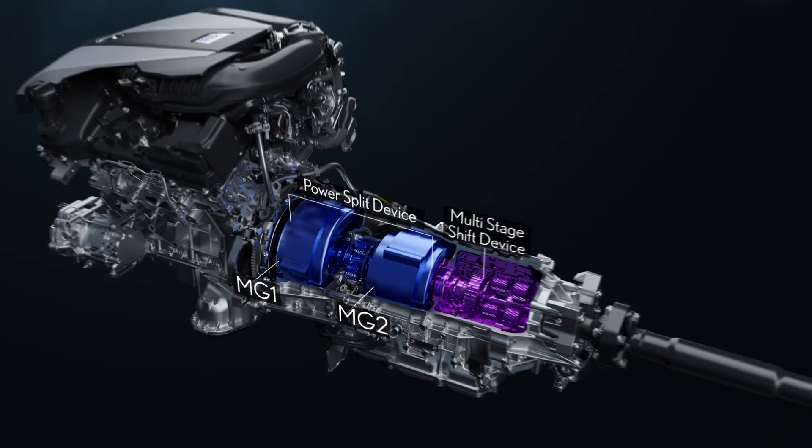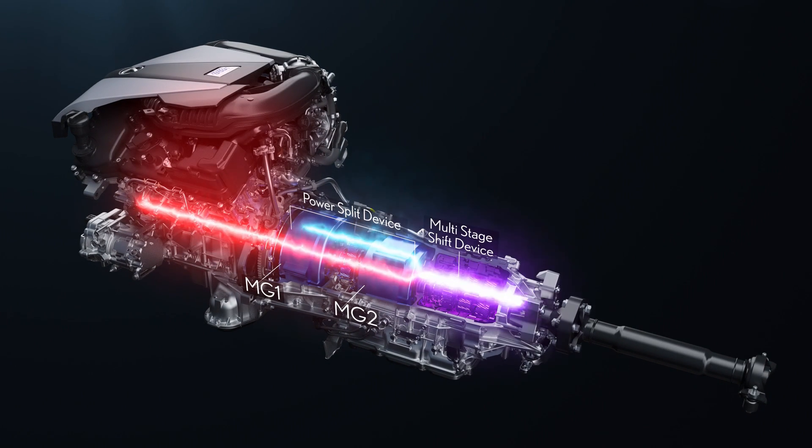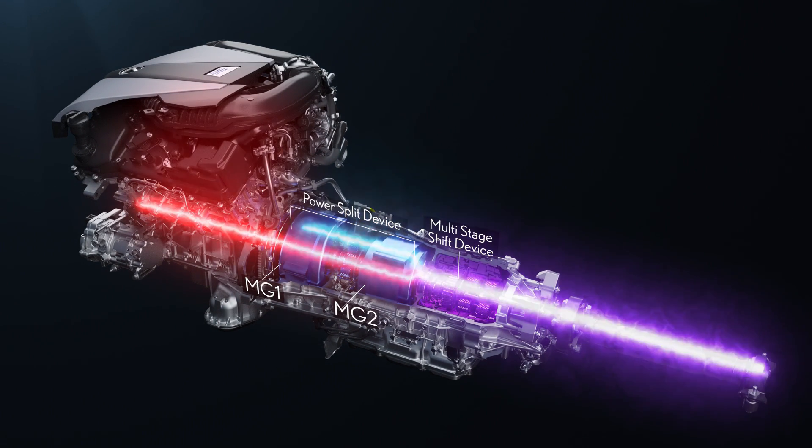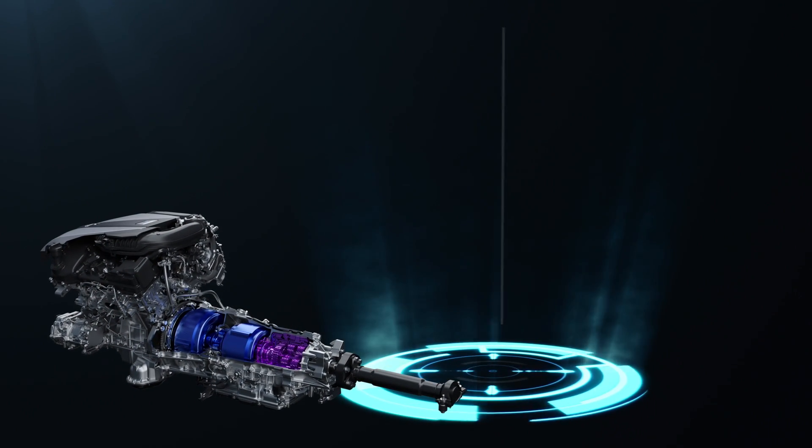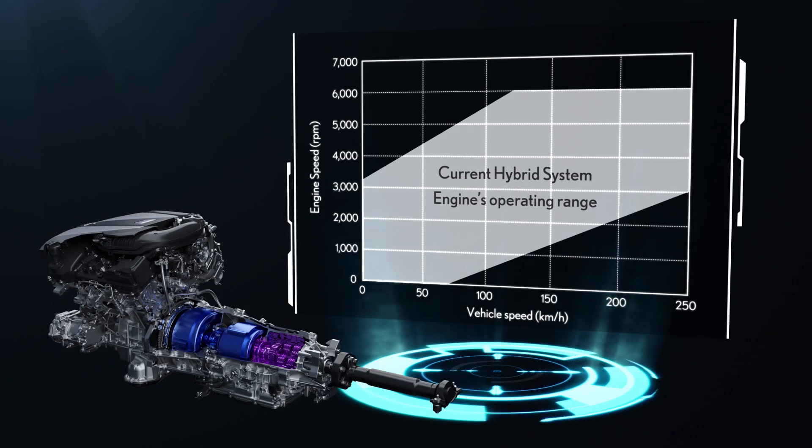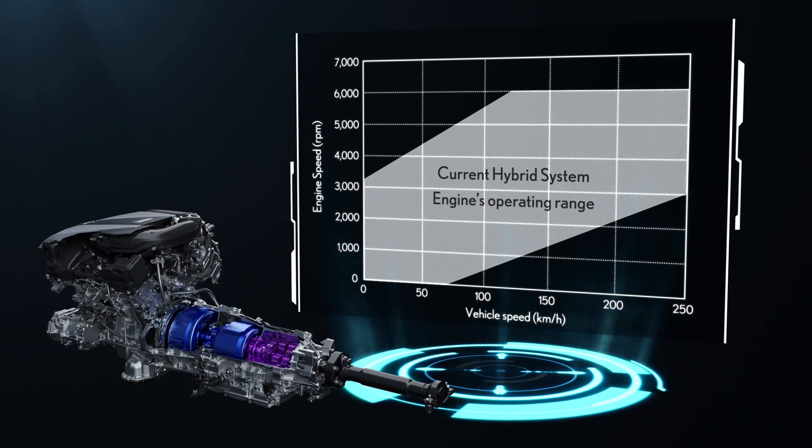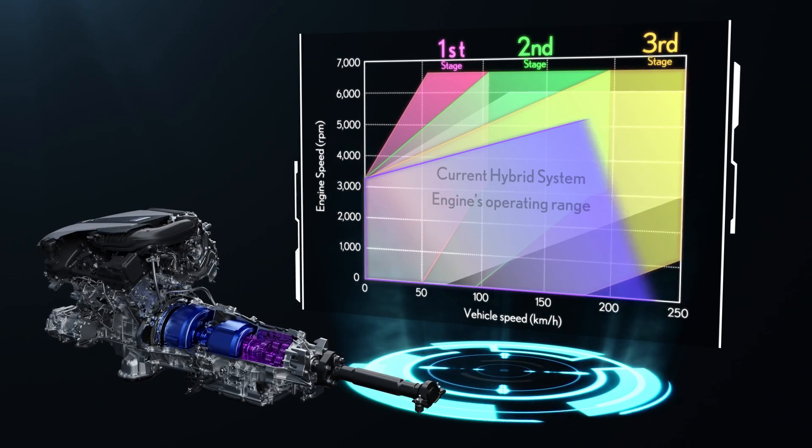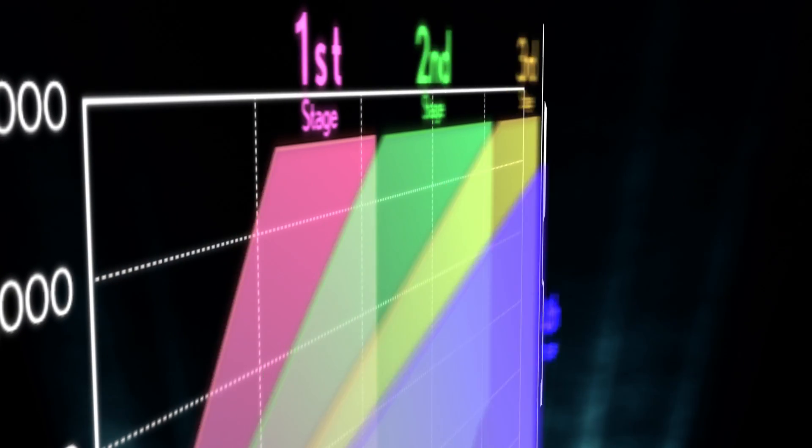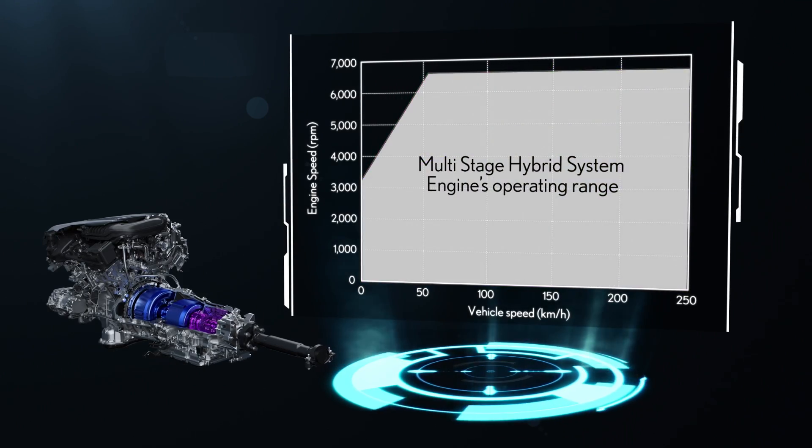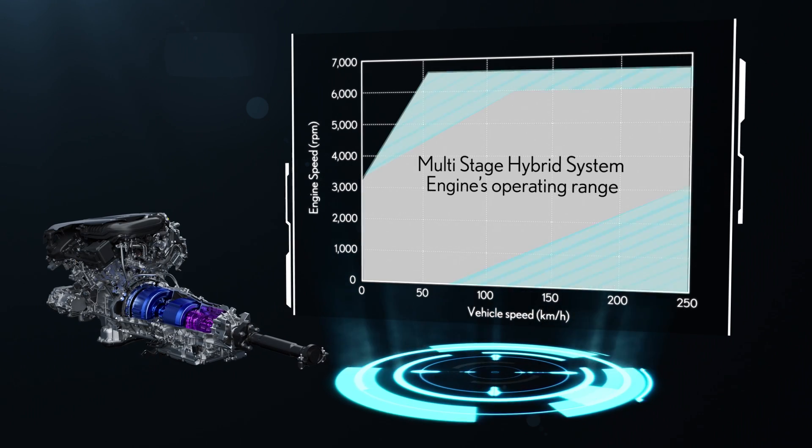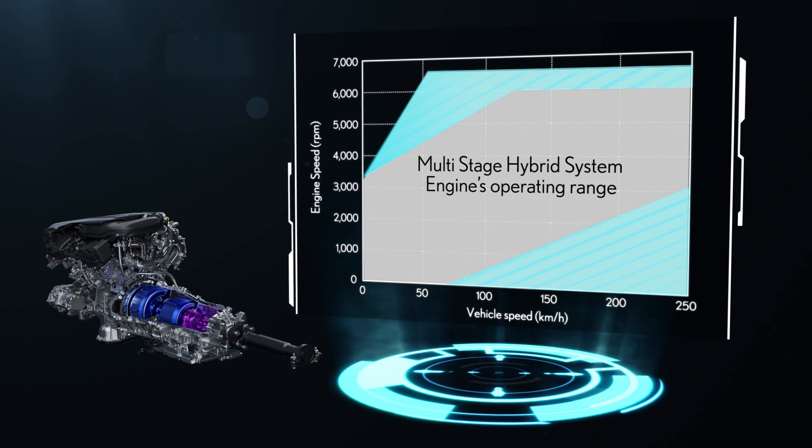This multi-stage shift device changes the output in four stages. This is the engine operating range of the current hybrid. The multi-stage hybrid changes the output in four stages to be able to utilize the engine speeds in a wider range from low to high speeds.